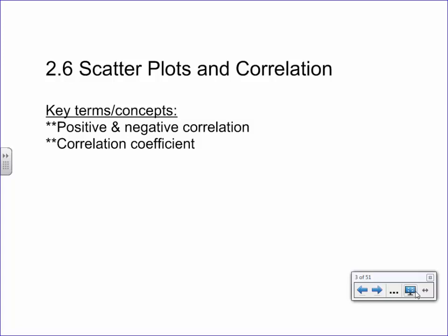Okay, we're going to talk about scatter plots and correlation. You've probably seen scatter plots in previous math courses. So we're going to talk about what positive and negative correlation are, and then something they call the correlation coefficient. If you ever take statistics, they'll show you a more exact way to calculate it, but we're going to just talk about it in general.